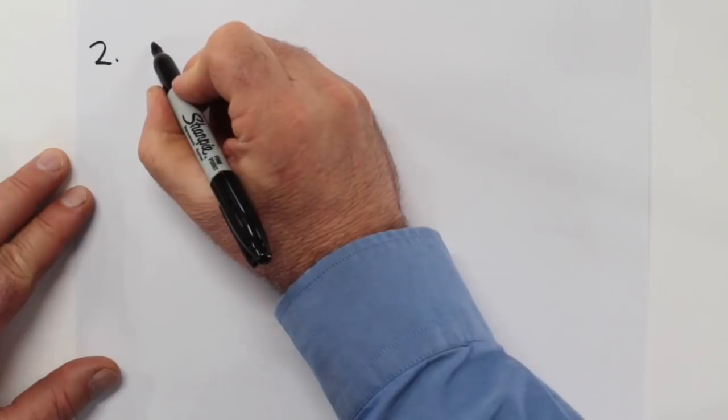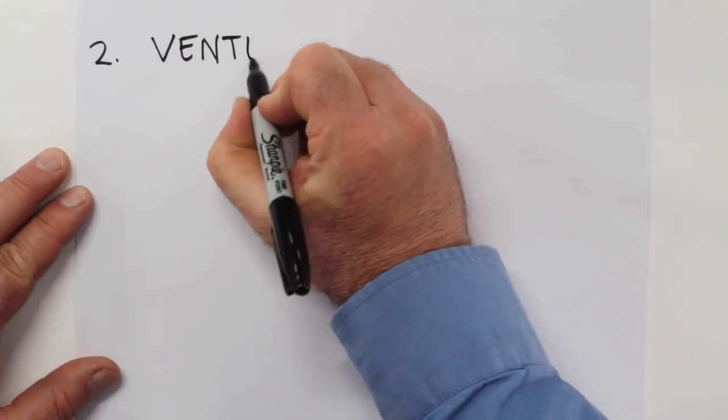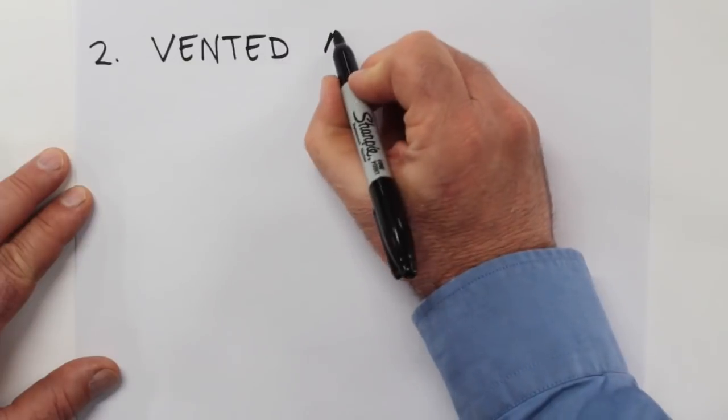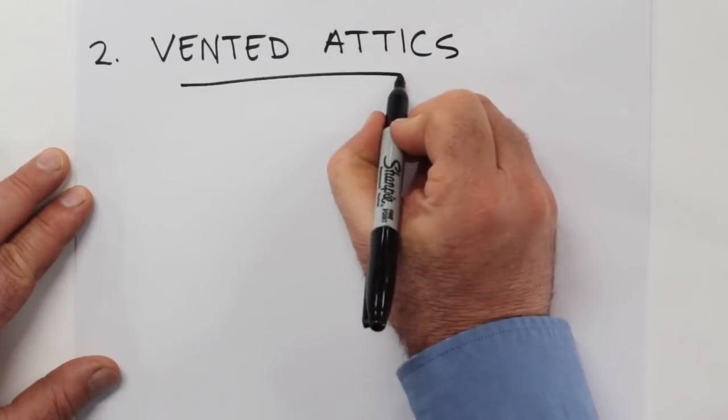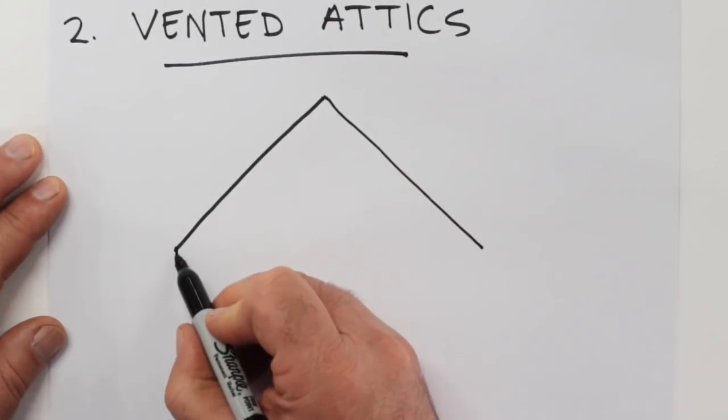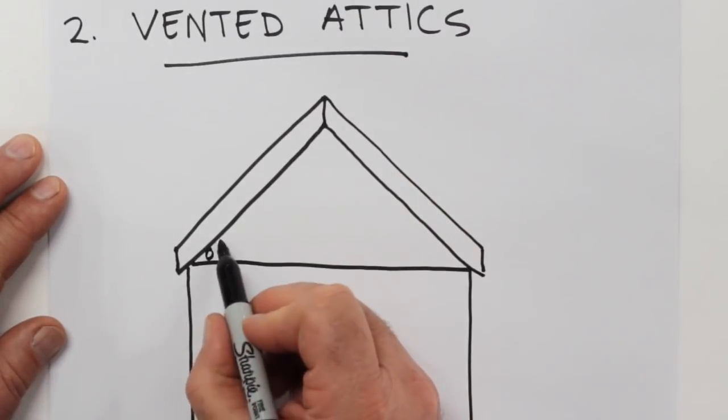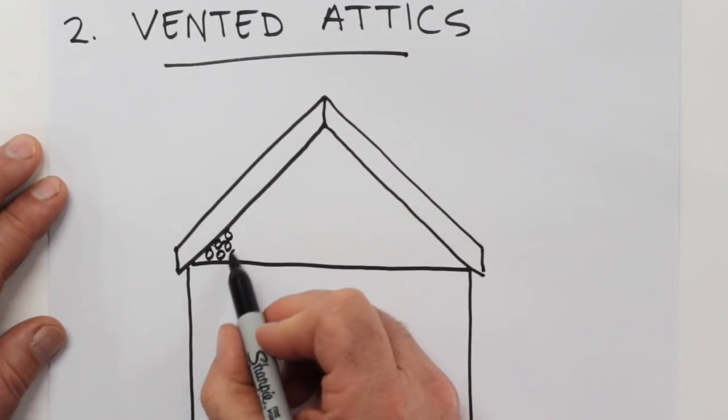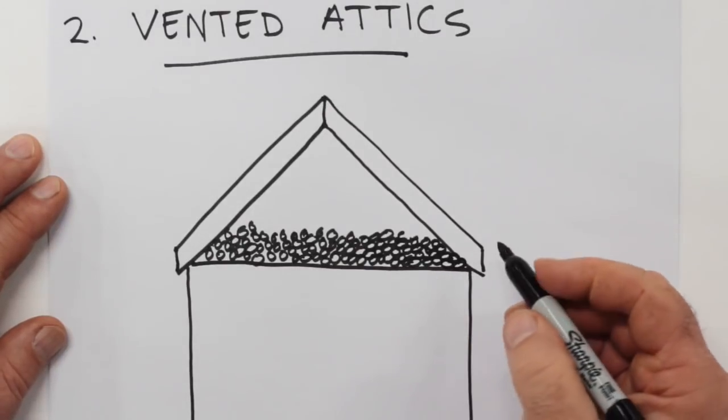A second instance when you might want to use open cell spray foam is in a vented attic situation, even in a heating climate in fact. So imagine for a moment you have a roof structure like you see here, and it's insulated with some open cell foam on the bottom of the attic, so above the joists that would form the ceiling of the interior space.